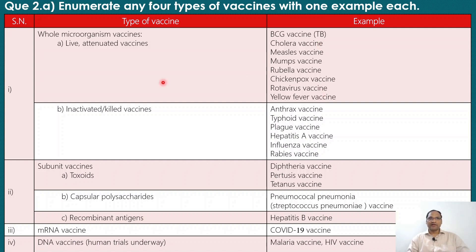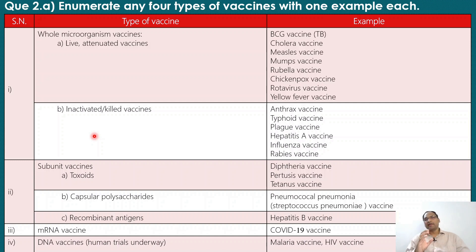The second subtype of whole microorganism vaccine is the inactivated or killed vaccine, where the microorganism is inactivated or killed using chemical methods — mostly formaldehyde or alkylating agents. Examples include anthrax vaccine, typhoid vaccine, plague vaccine, hepatitis A, influenza, and rabies vaccine.